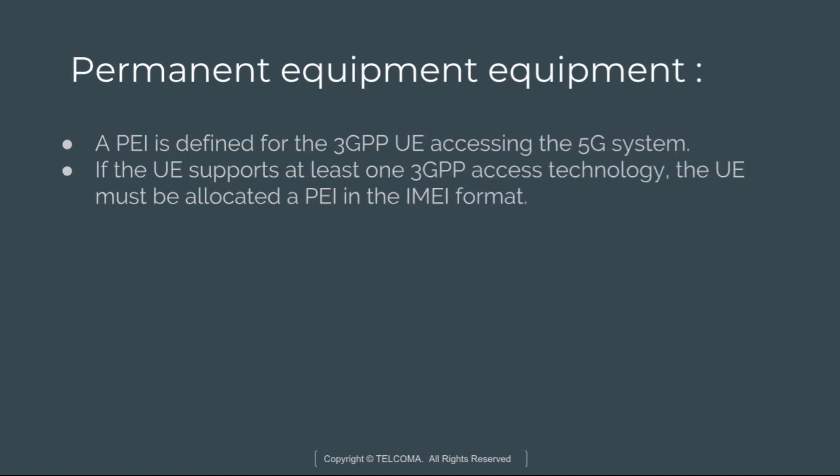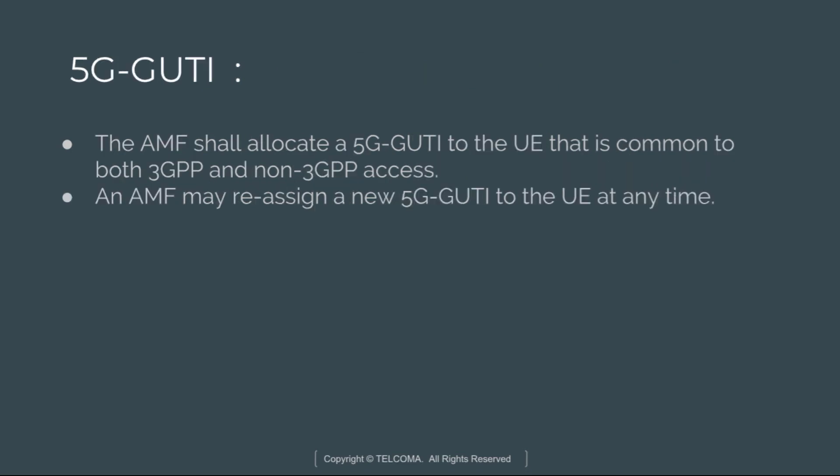Next is the Permanent Equipment Identifier, or PEI. A PEI is defined for 3GPP user equipment accessing the 5G system. The PEI can assume different formats for different user equipment types and use cases. The UE shall present the PEI to the network together with the identification of the PEI format being used. If the user equipment supports at least one 3GPP access technology, the UE must be allocated a PEI in IMEI format.